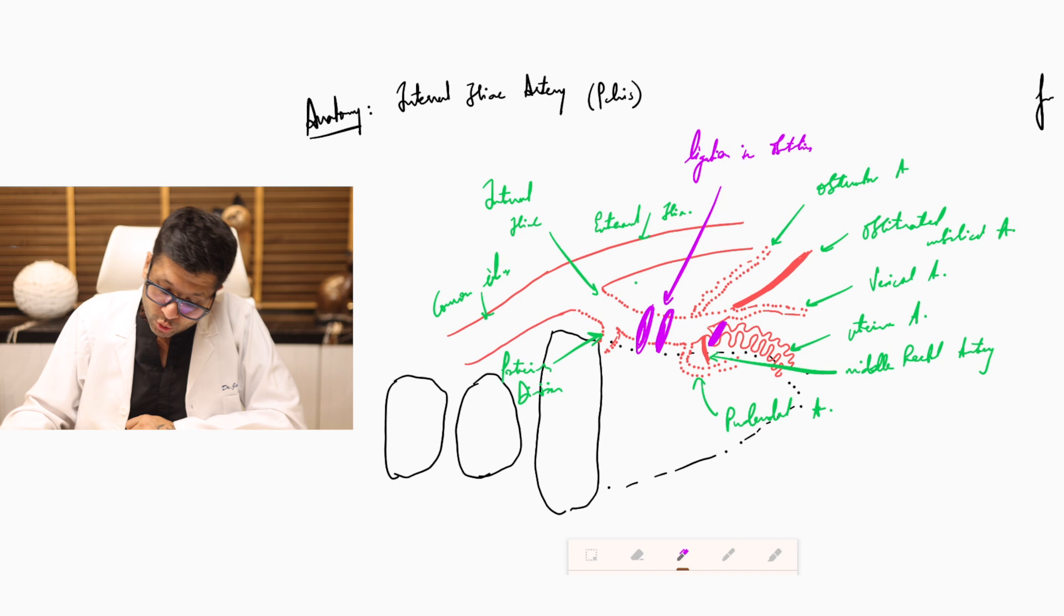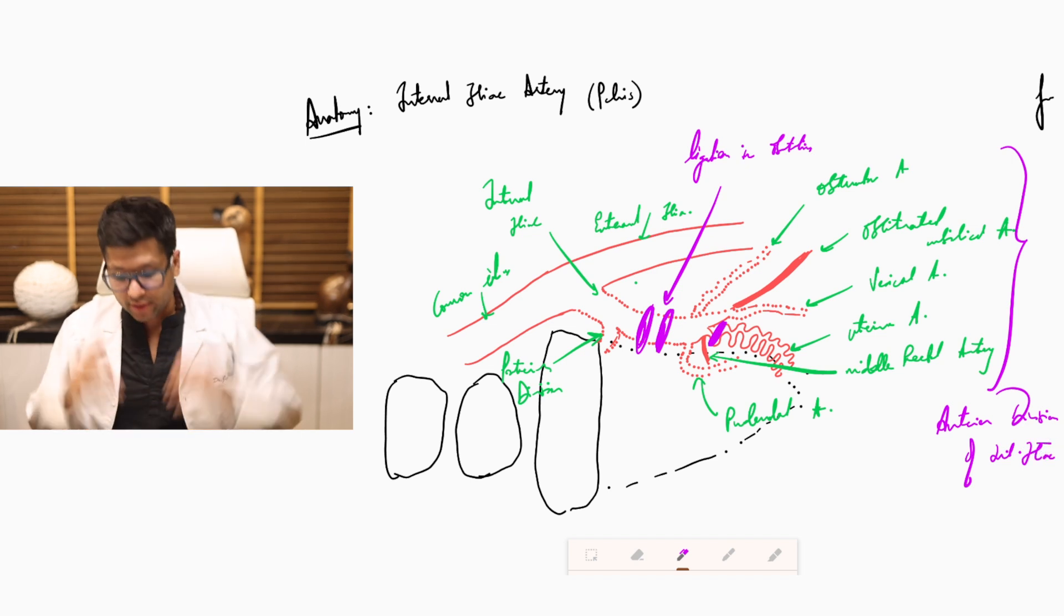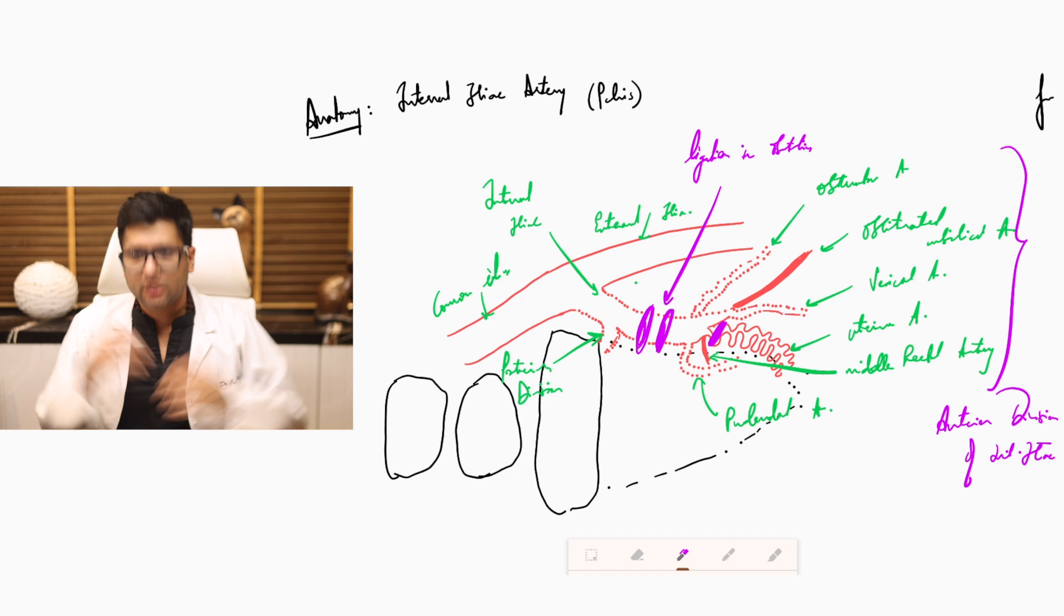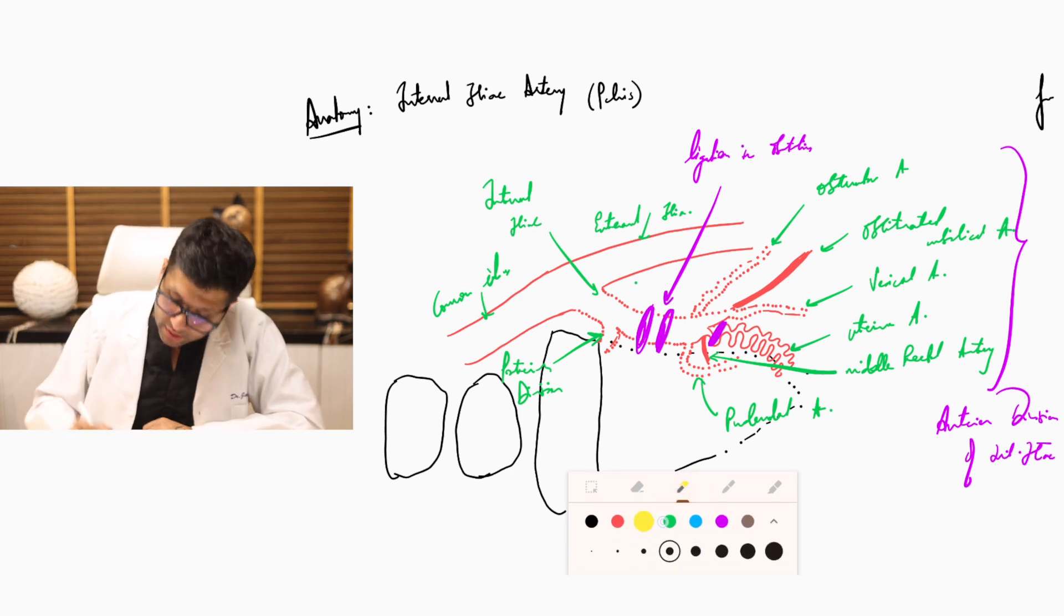All of this usually occurs. All these guys are usually the branches of the anterior division of the internal iliac. Please remember, this is a branch in the depth of the pelvis.